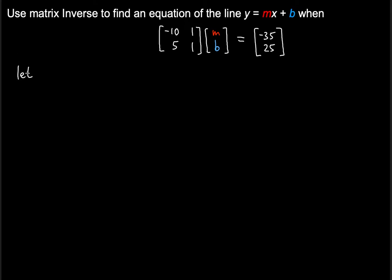We're going to let the A matrix be negative 10, 1, 5, 1. And we need to find the inverse of that. Now, why are we finding the inverse of this particular matrix? We're going to let the 2 by 1 matrix mb be represented by a vector. Let's use p as the vector.